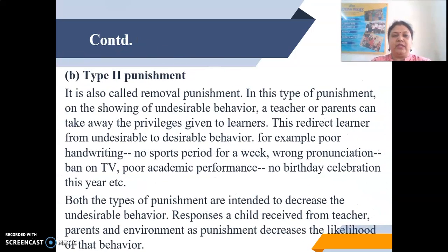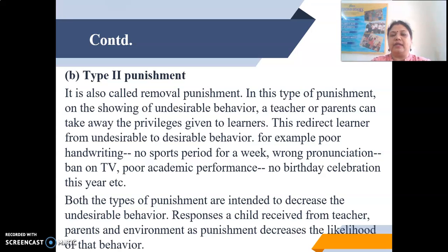Type 2 punishment is also called removal punishment. In this type, a teacher or parents can take away the privileges given to learners to redirect them from undesirable to desirable behaviour. For example, poor handwriting — no sports period for a week. Wrong pronunciation — ban on team participation. No performance — no birthday celebration this year. These types of punishments are intended to decrease undesirable behaviour. Responses a child receives from teachers, parents, and environment as punishment decrease the likelihood of that behaviour.